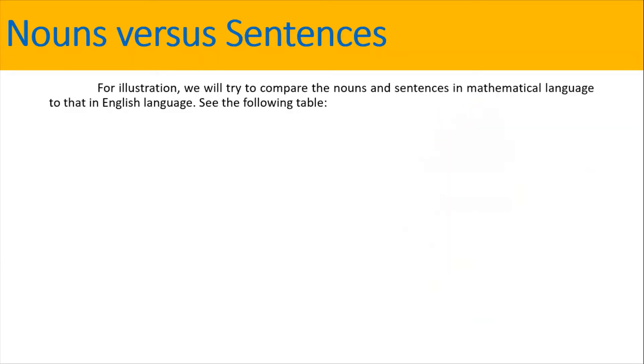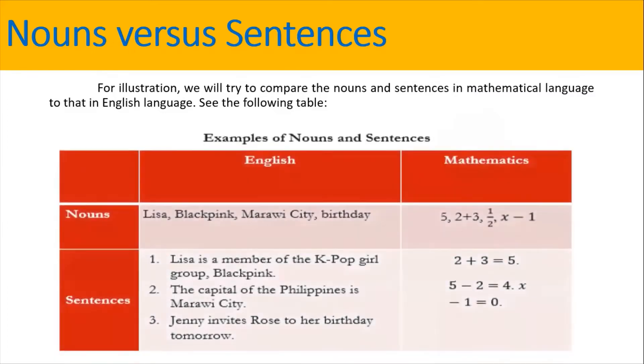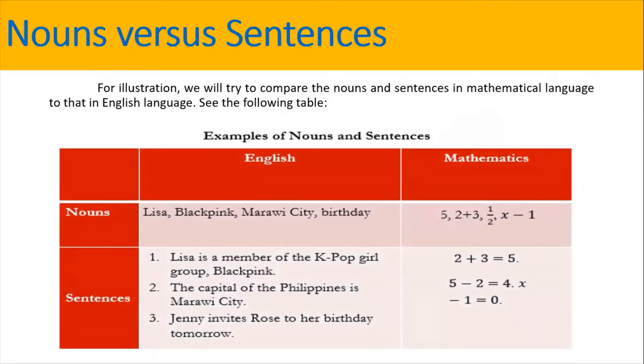For illustration, we will try to compare the nouns and sentences in mathematical language to that in English language. See the following table. So, we have the examples of nouns and sentences. For the English, we have the nouns Lisa, Blackpink, Marawi City, and Birthday.